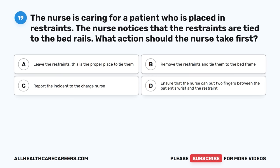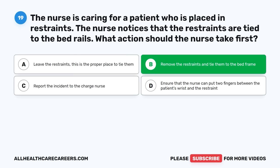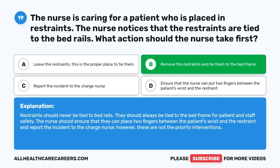Question nineteen: The nurse is caring for a patient who is placed in restraints. The nurse notices that the restraints are tied to the bed rails. What action should the nurse take first? A. Leave the restraints — this is the proper place to tie them. B. Remove the restraints and tie them to the bed frame. C. Report the incident to the charge nurse. D. Ensure two fingers can fit between the patient's wrist and the restraint. The correct answer is B. Restraints should never be tied to bed rails; they should always be tied to the bed frame for patient and staff safety. The two-finger check and reporting to the charge nurse are also important but are not the priority interventions.